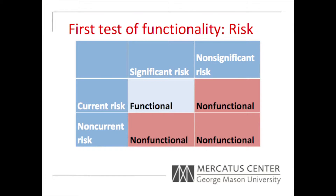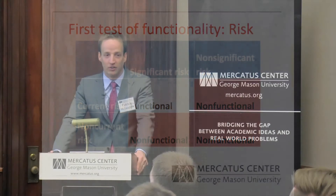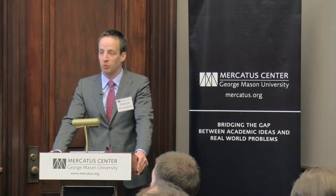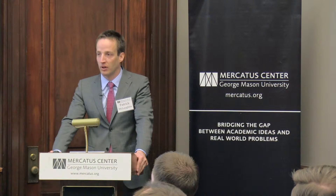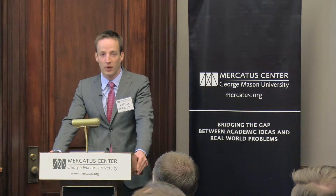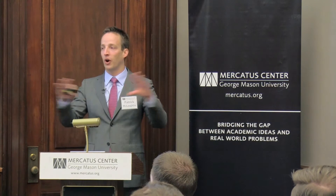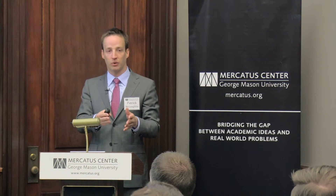The first one is what I call the first test of functionality, and that's focused on risk. There are two parts. I think probably all important ideas can be summarized in a two-by-two matrix. The first question to ask is: is the regulation, is the rule that's being reviewed addressing a significant risk? Significant means a risk that's widespread, affects a large number of people, and has serious consequence.